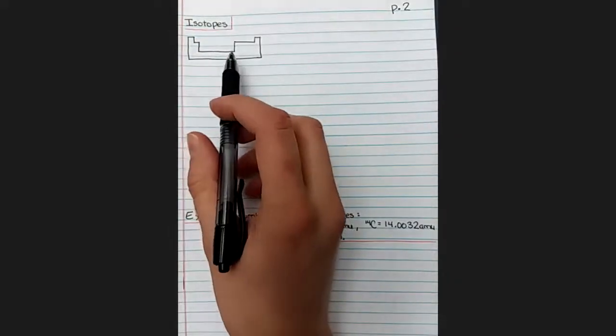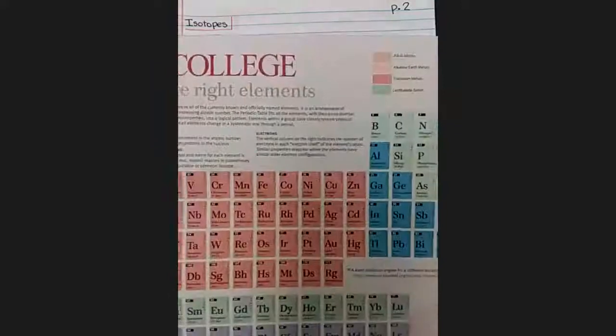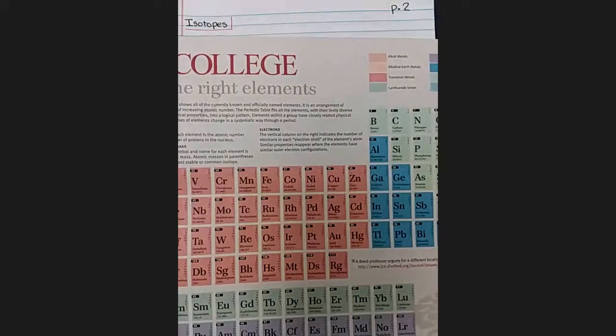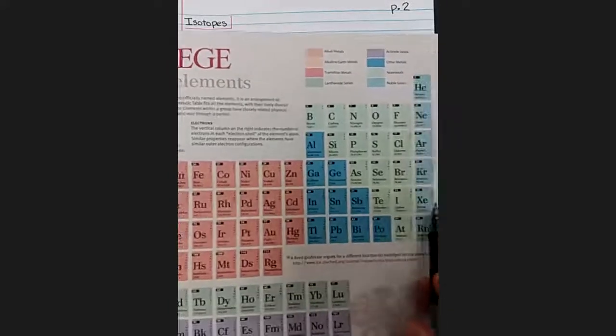You may recognize this slightly blobby looking box as the periodic table. In the last video we talked all about chemical symbols, and this is probably where you've seen those chemical symbols before.